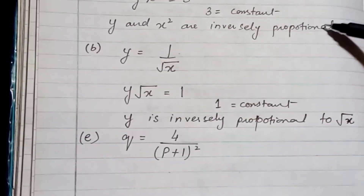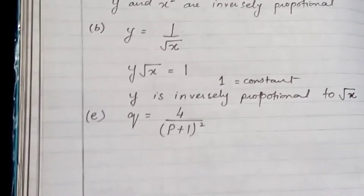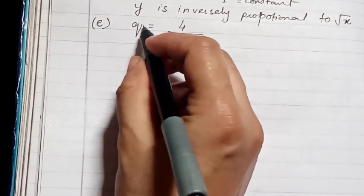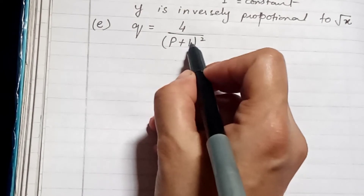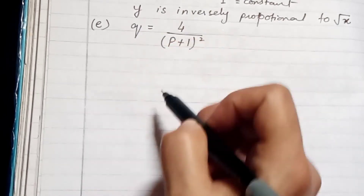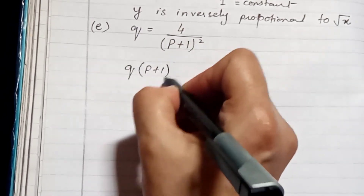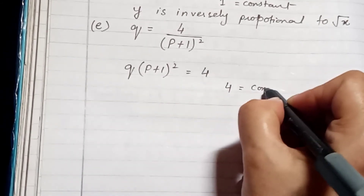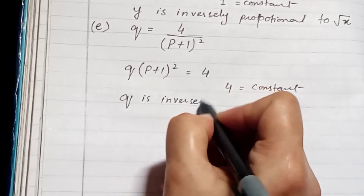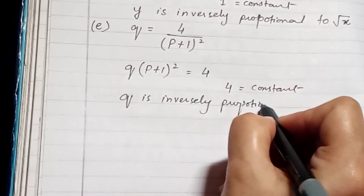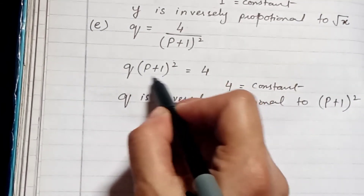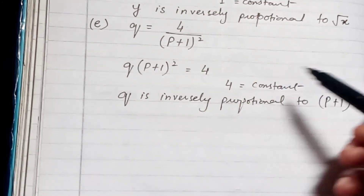Parts (c) and (d) are your homework. For part (e), we have q equals 4 upon (p+1)². Whatever is in the denominator, move the whole thing to the other side: q multiplied by (p+1)² equals 4, where 4 is a constant. So q is inversely proportional to (p+1)². You have to complete the rest of question three.